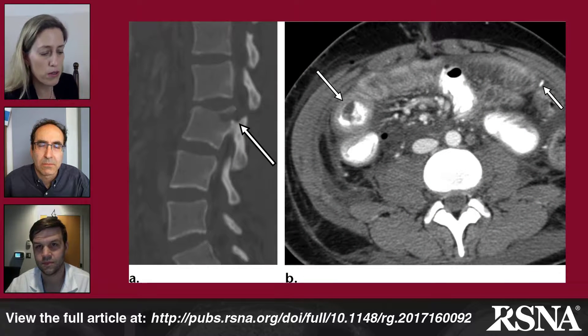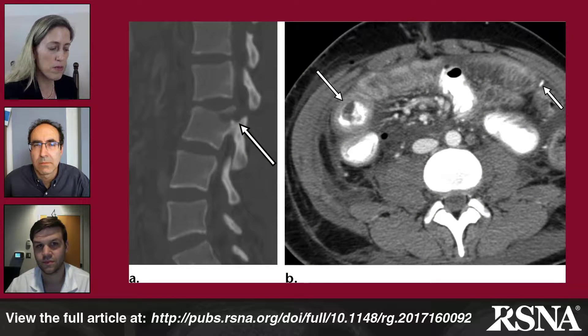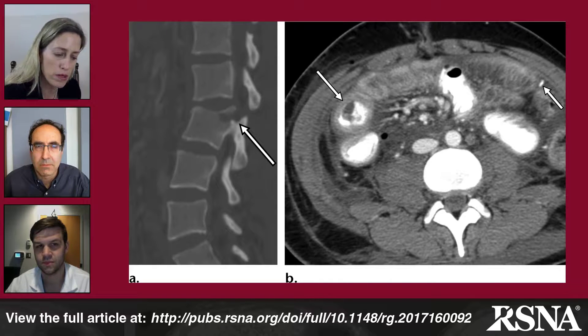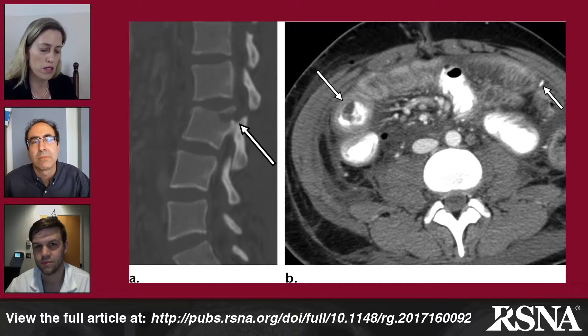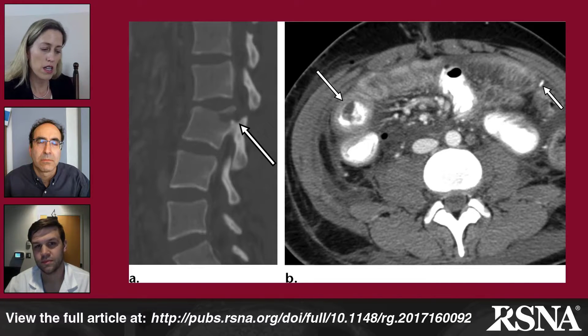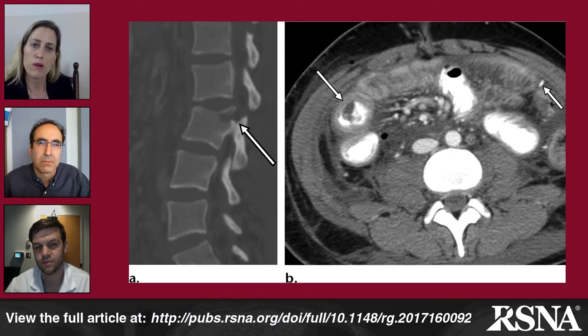Bowel injury was particularly likely when the fracture pattern had a burst component. In Figure 13, a 25-year-old woman had a chance fracture — a hyperflexion injury of the lumbar spine with distraction of the posterior elements. At CT, she demonstrated mucosal hyperenhancement and bowel edema in several loops of bowel. Due to the high risk of underlying bowel injury, she was brought to exploratory laparotomy, where devascularized ischemic bowel was encountered, necessitating a right hemicolectomy and partial small bowel resection.